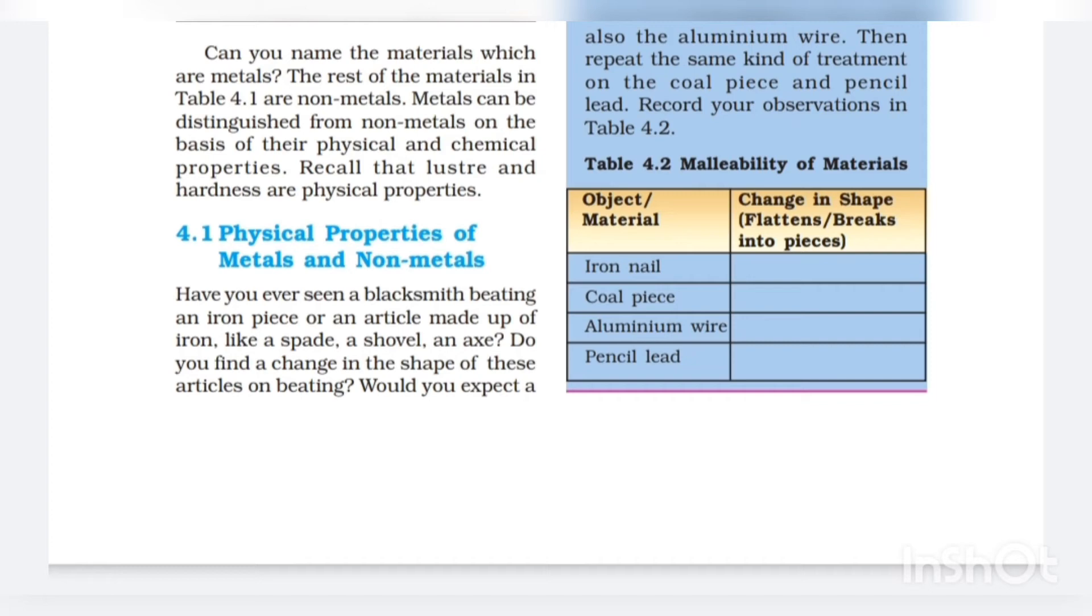So we have to try this activity with these things. Then record your observations in Table 4.2. We have to record all the observations we see in the experiment. Table 4.2: Malleability of Materials. Malleability here means that which can be shaped by beating with a hammer.